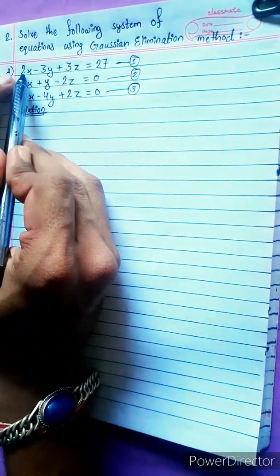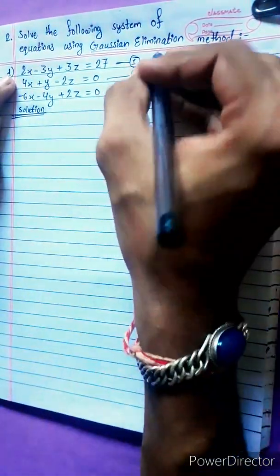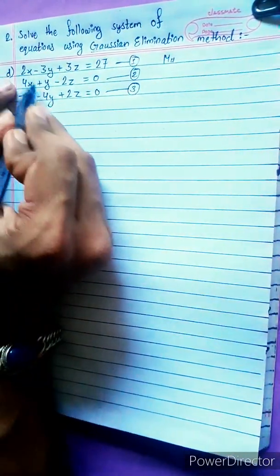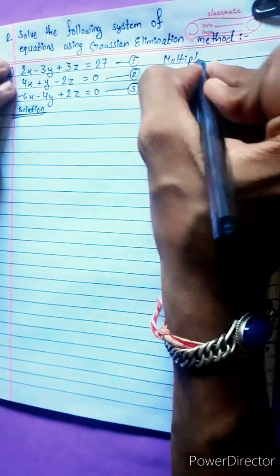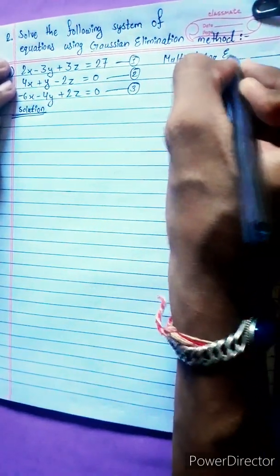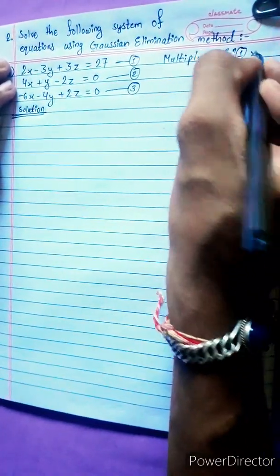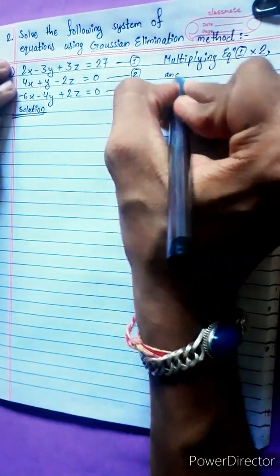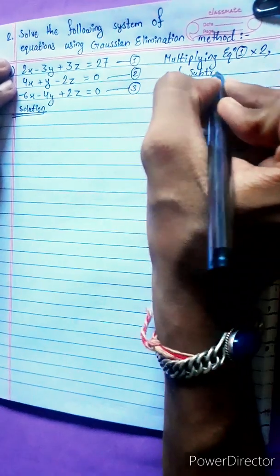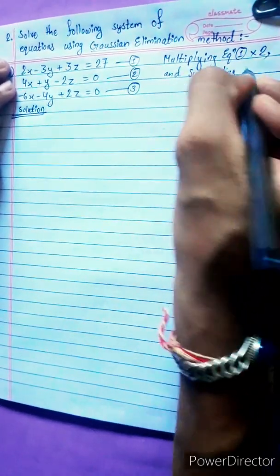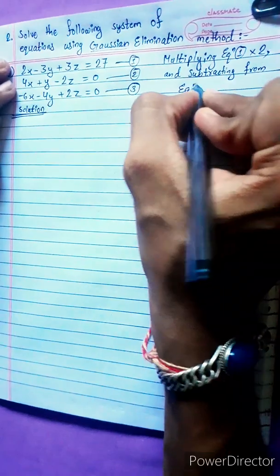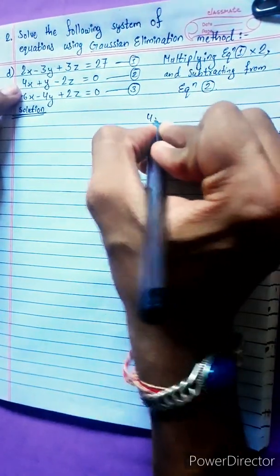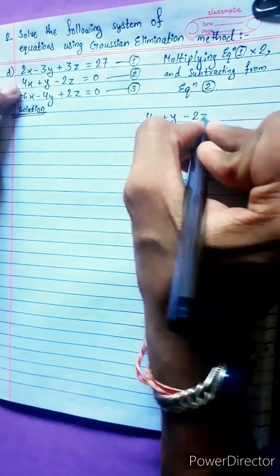We have to compare equation 1 with the other equations. Solving equations 1 and 2 first: multiplying equation 1 by 2 and subtracting from equation 2. Doing this, we get 4x plus y minus 2z equals 0.